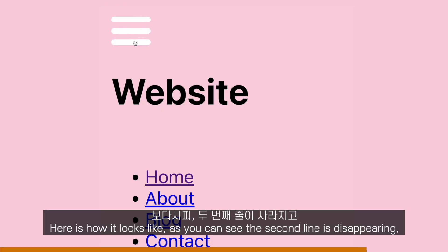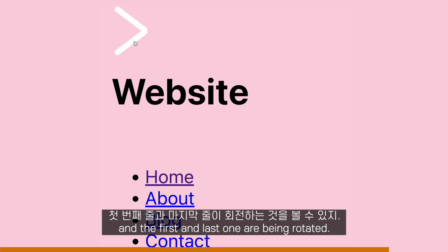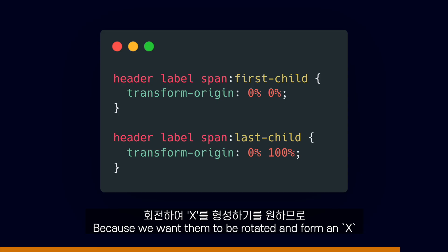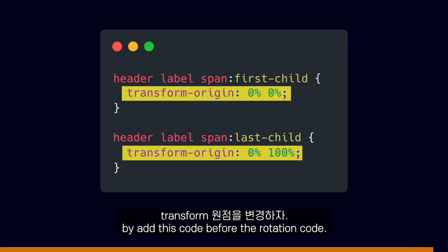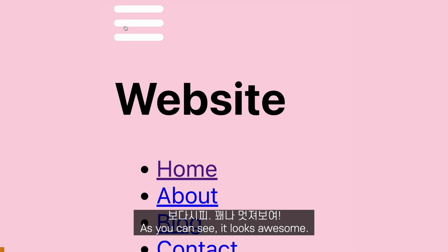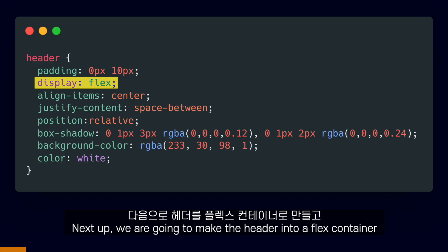Here is how it looks. As you can see, the second line is disappearing and the first and last one are being rotated. Because we want them to rotate and form an X, we are going to change their transform origins by adding this code before the rotation code. As you can see, it looks awesome.